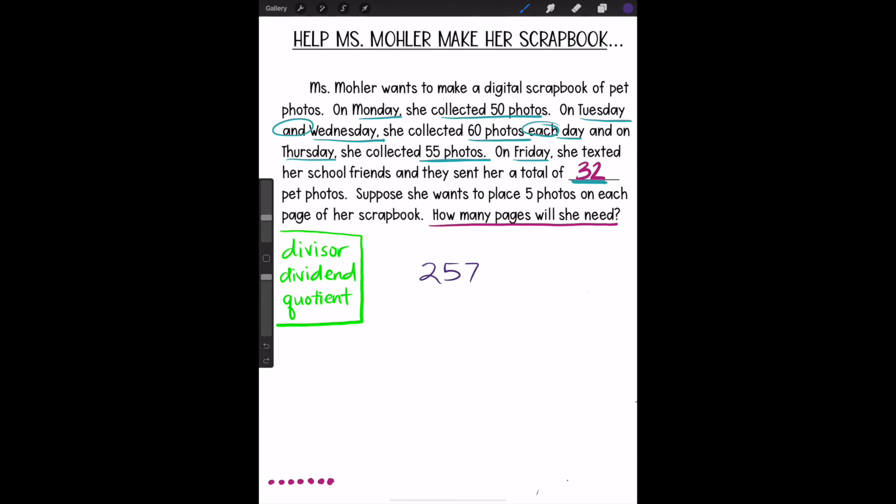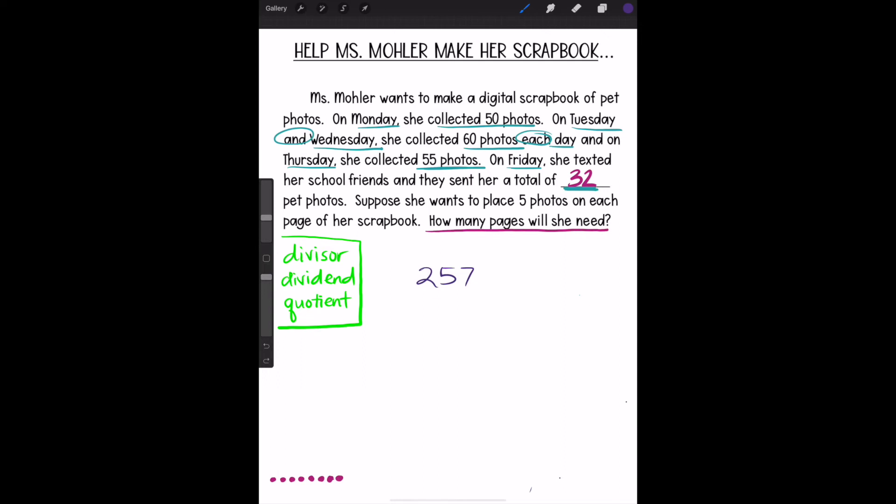After adding my number of photos together and finding that I have a total of 257 photos for my book, I can now find how many pages I'll need for my scrapbook. I need to remember that I am only placing five pictures on each page. So what should I do next? If you said divide 257 by 5, you are awesome. Well boys and girls, it's finally time. Let's divide.